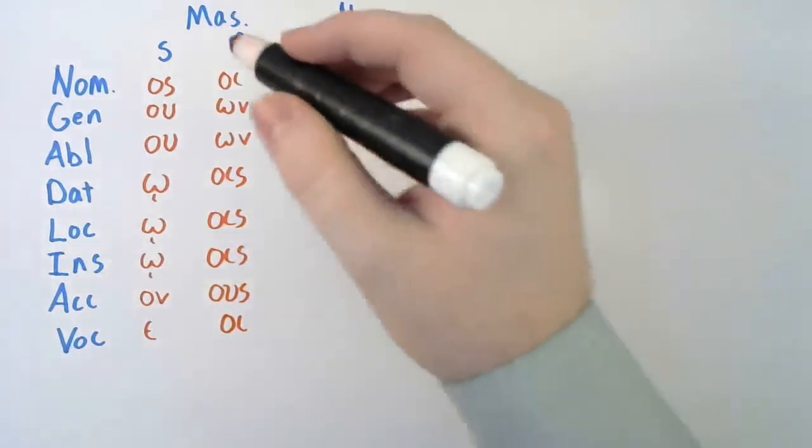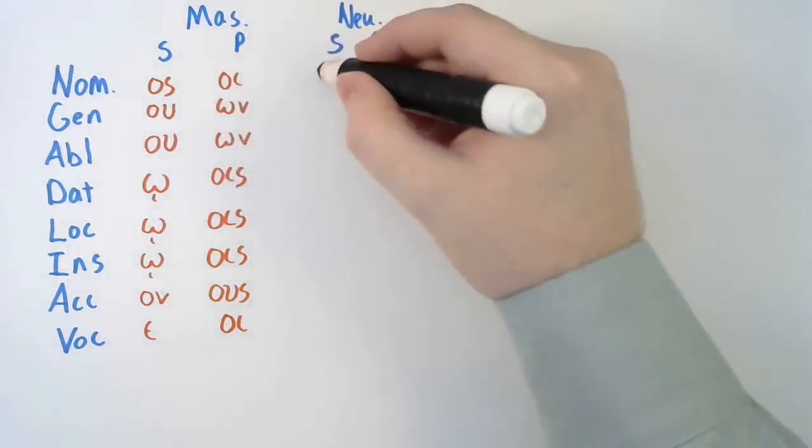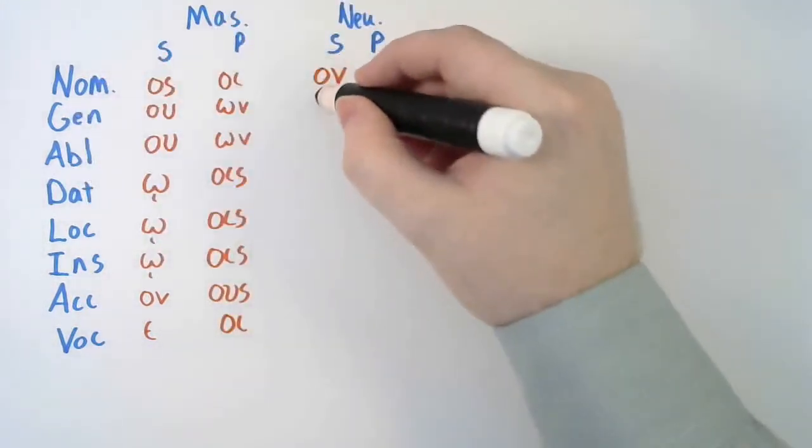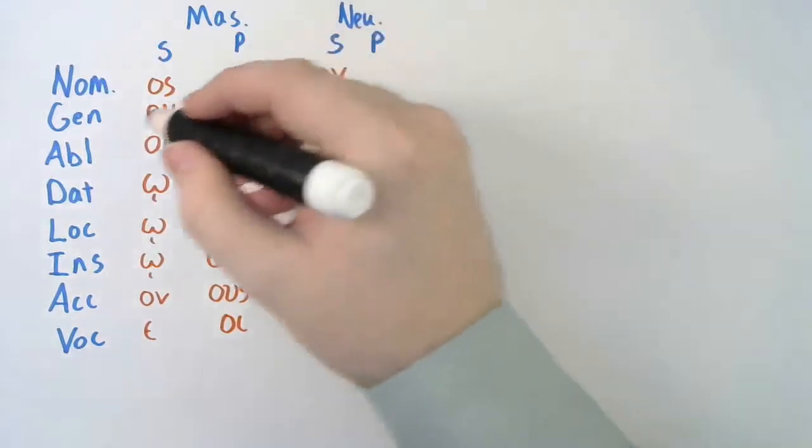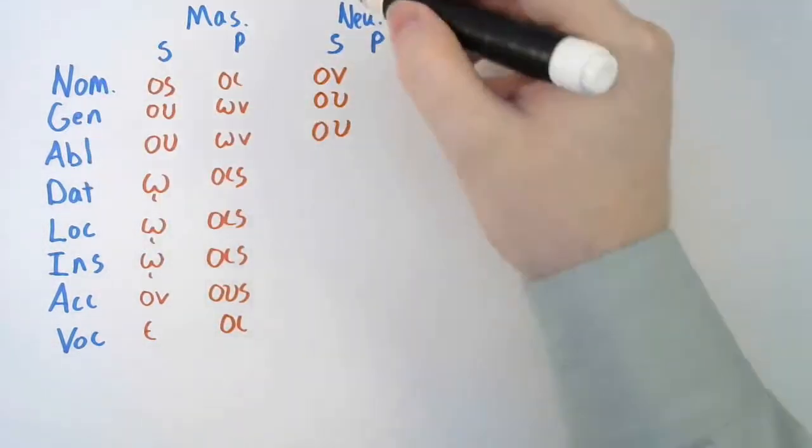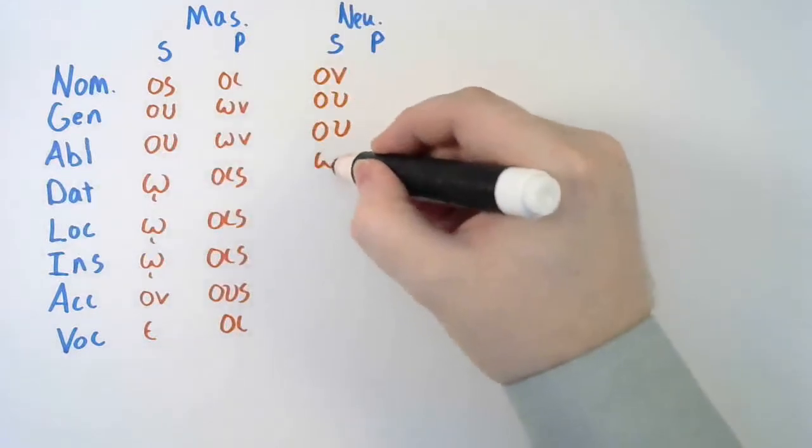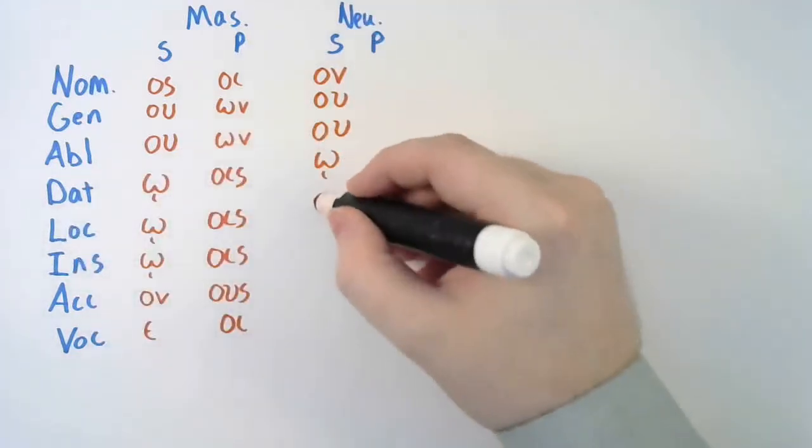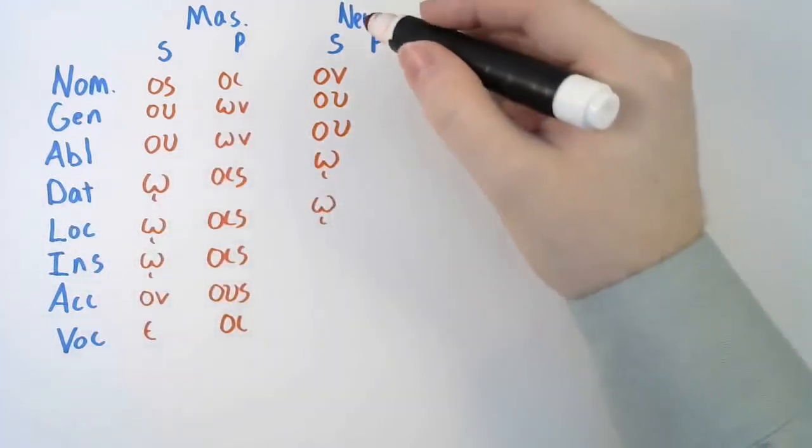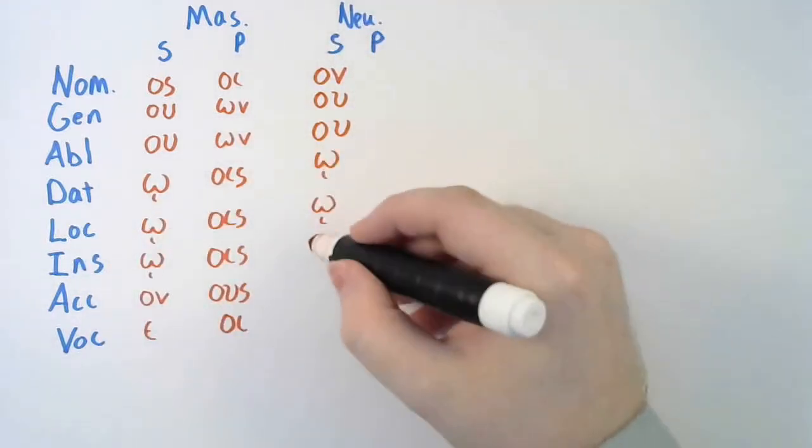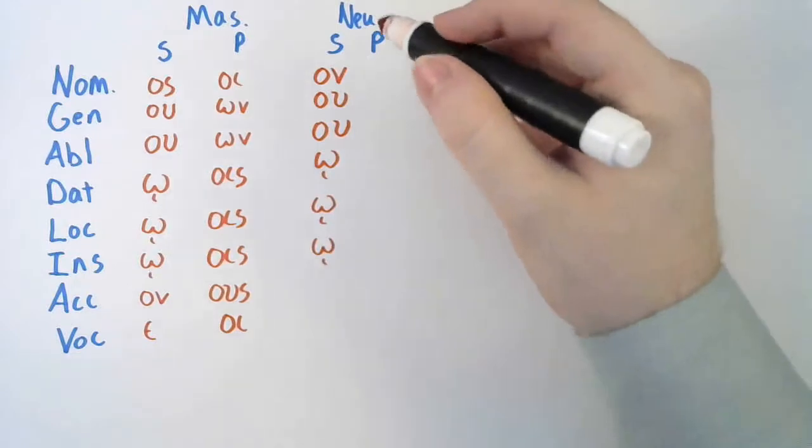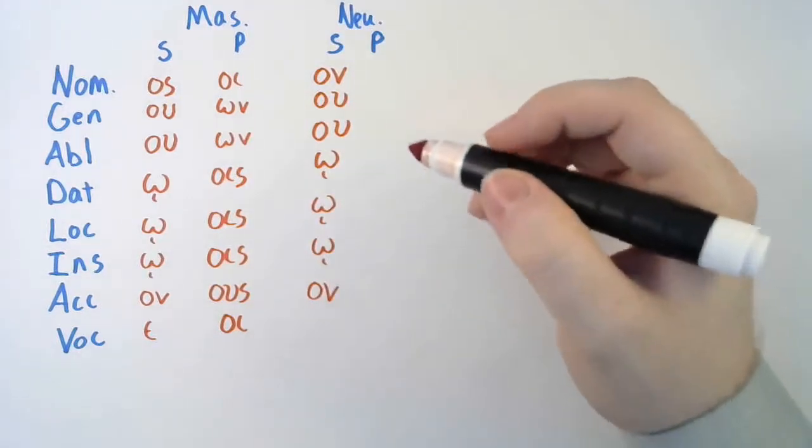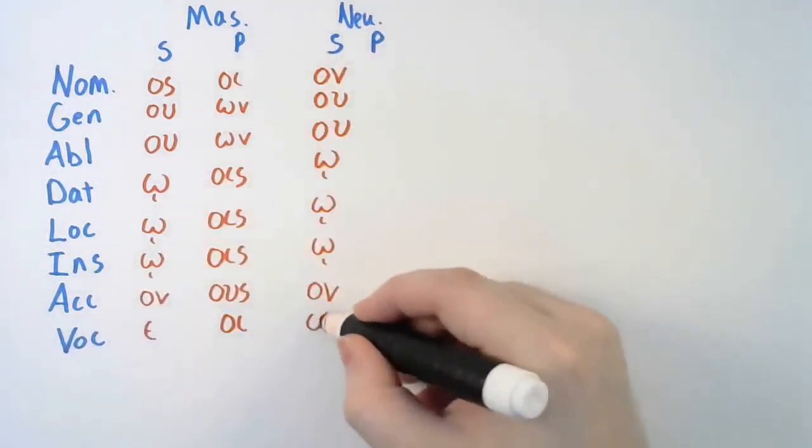Now for the neuters. Neuter singular nominative is on. Neuter singular genitive is ou. Neuter singular ablative is ou. Neuter singular dative is o with an iota subscript. Neuter singular locative is o with an iota subscript. Neuter singular instrumental is o with an iota subscript. Neuter singular accusative is on. No iota subscript. And neuter singular vocative is on.